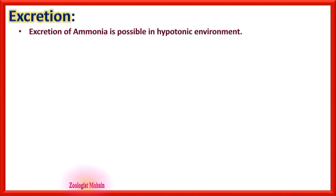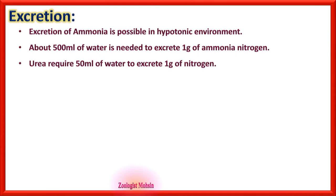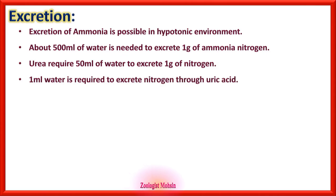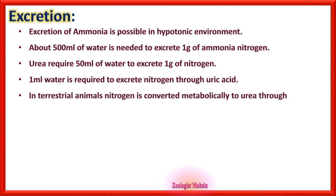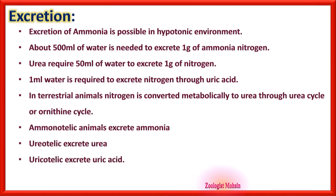Excretion of ammonia is possible only in hypotonic environments. About 500 ml of water is needed to excrete one gram of ammonia nitrogen. Urea requires 50 ml of water to excrete one gram of nitrogen. Only 1 ml of water is required to excrete nitrogen through uric acid. Ammonotelic animals excrete ammonia, ureotelic excrete urea, uricotelic excrete uric acid.